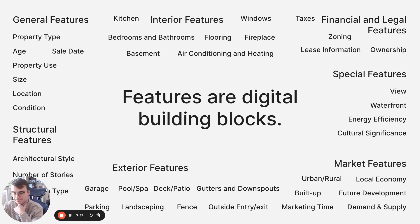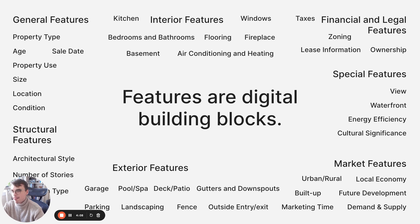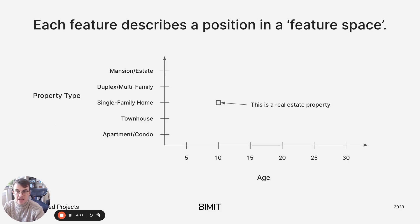So — features in the context of machine learning. Features are digital building blocks; they are what we use to build digital representations of things in the real world. We use them to represent properties in comps, but in machine learning we use them to represent everything. The task of deciding what features to use and which not to use to represent something is called feature engineering. When a feature is used to represent something, that value or category describes a position in a feature space. A feature space with two features has two dimensions, but if we use 20 features it would have 20 dimensions — feature spaces in machine learning can have dozens, hundreds, or even thousands of dimensions.